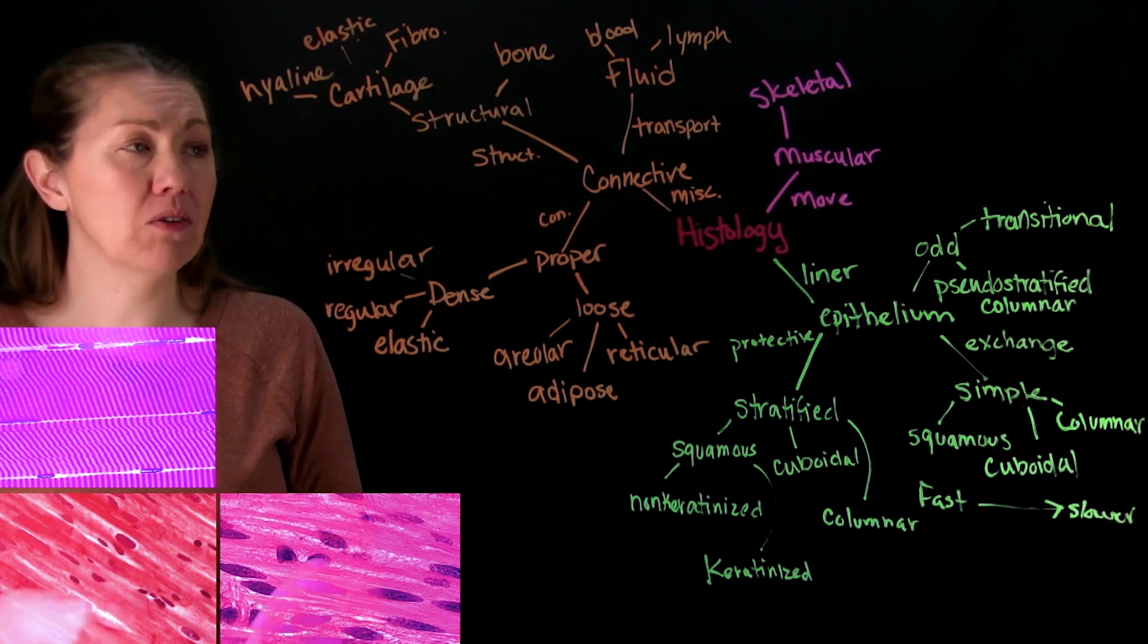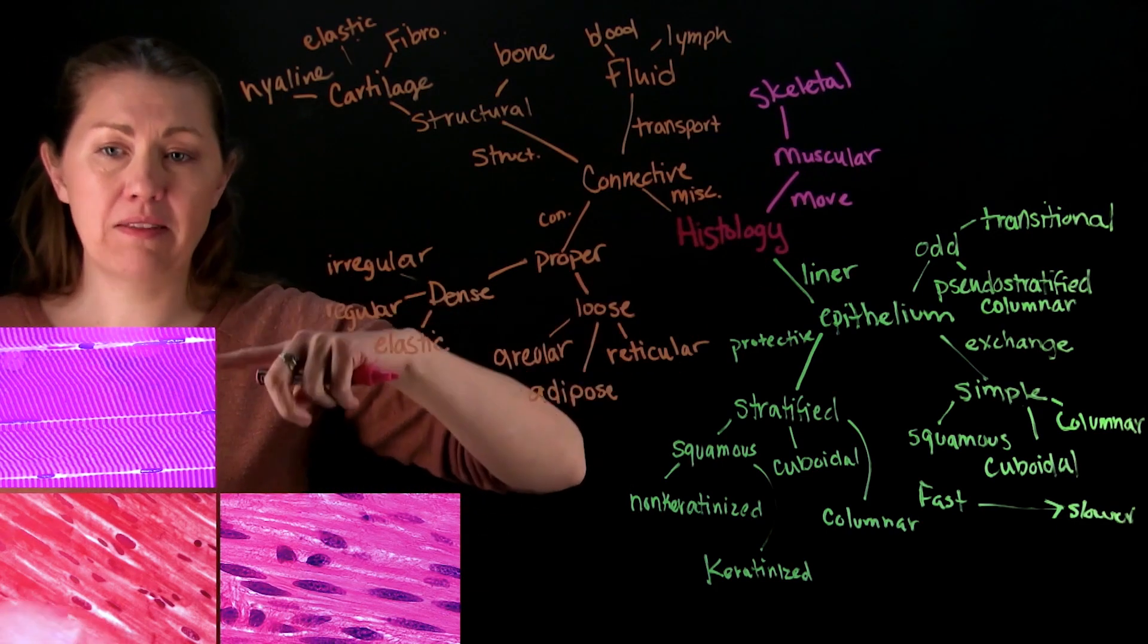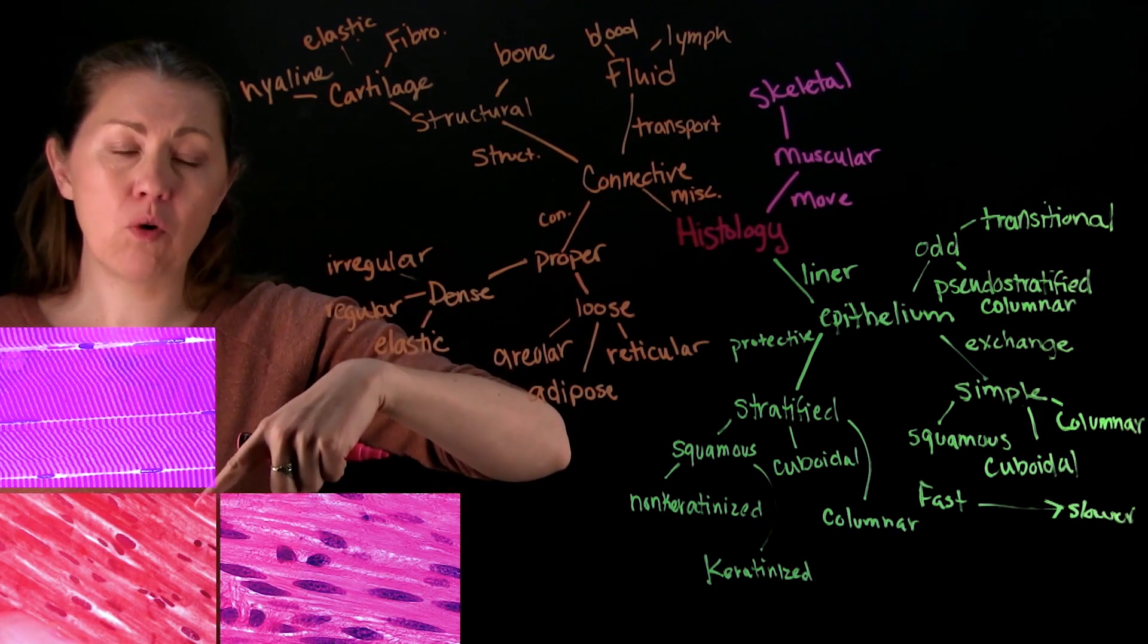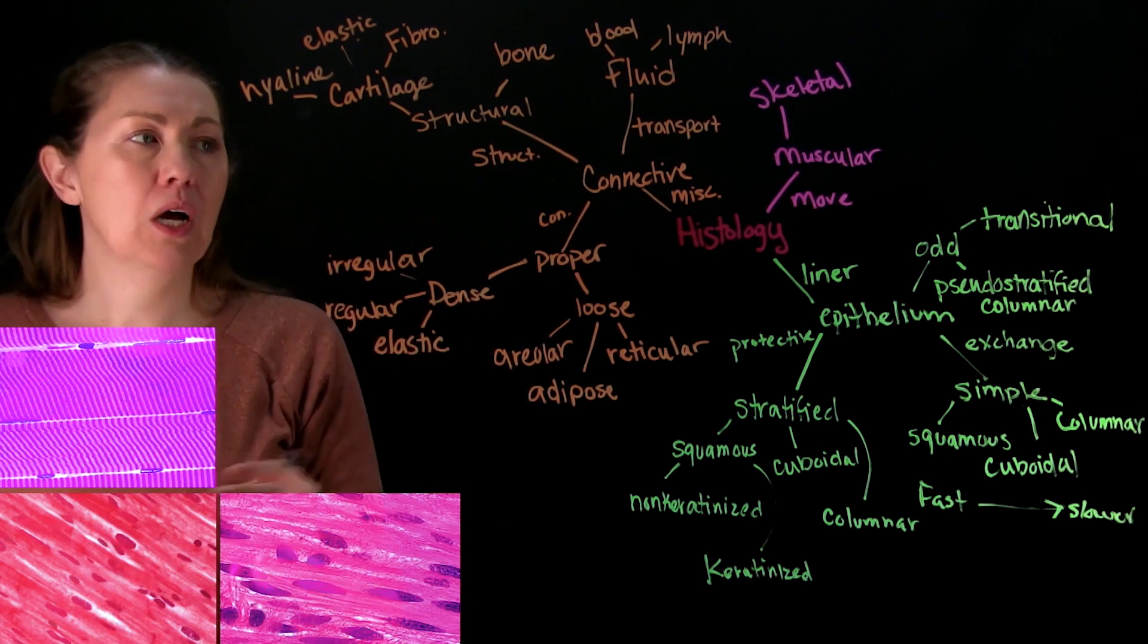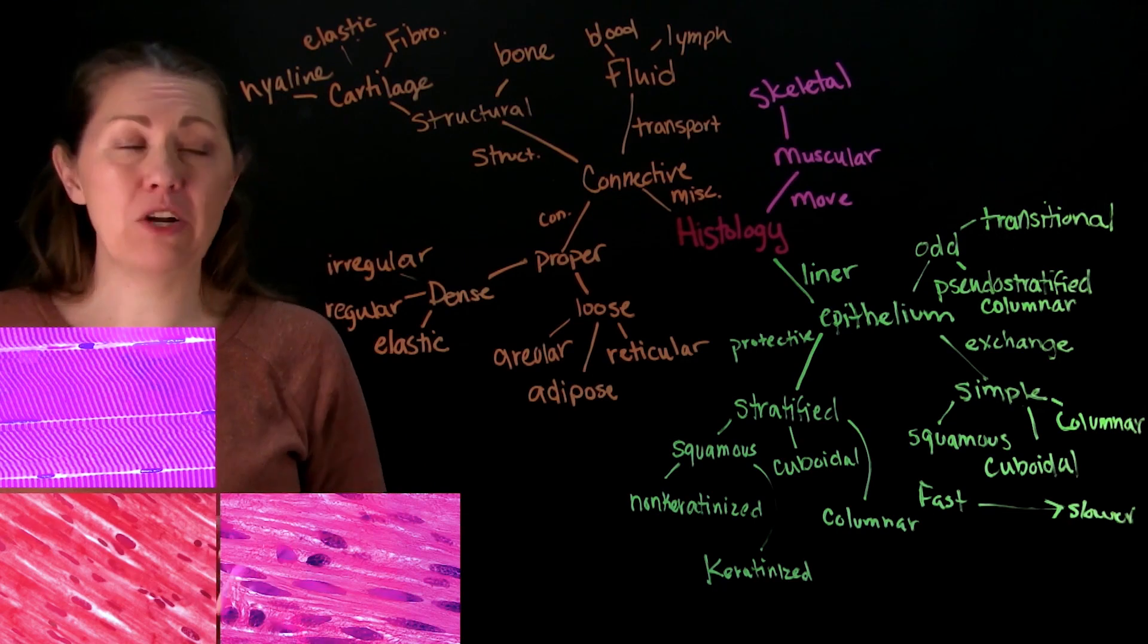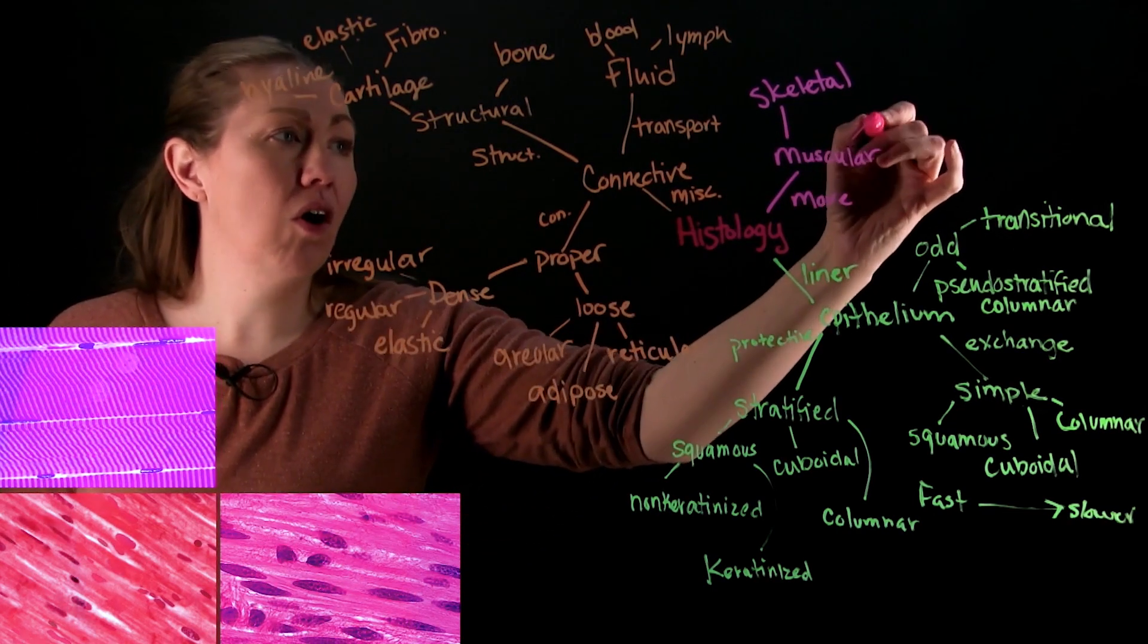So skeletal muscle, that's that top one. As you go down into this corner these also have striations, you still have stripes harder to see in this image, but this one is only in one location in the entire body and so this is cardiac muscle.